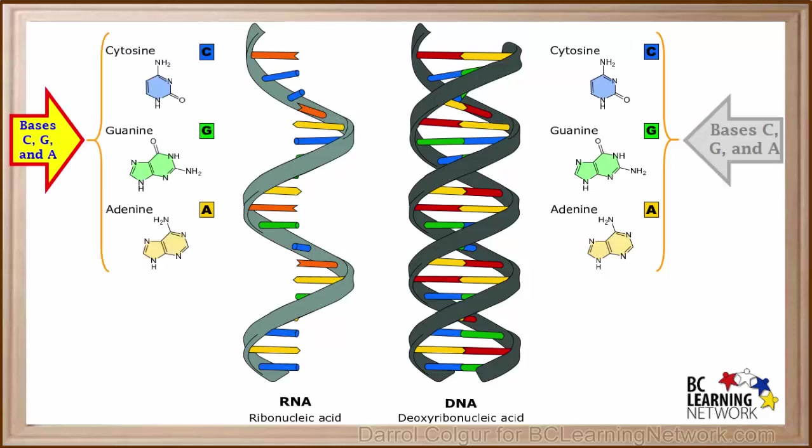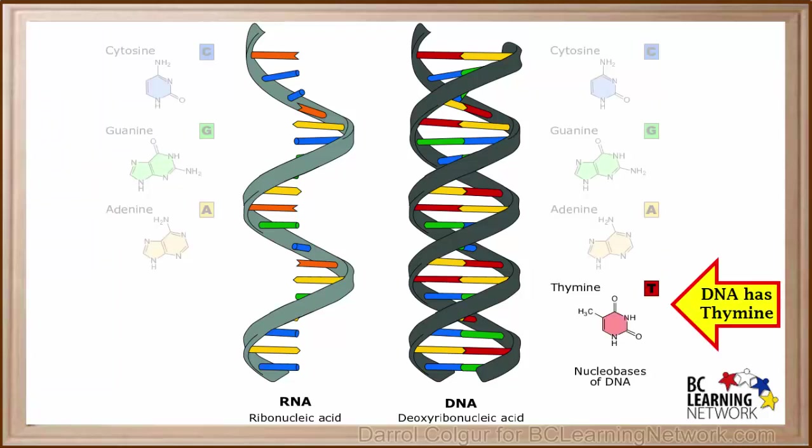And RNA also contains the bases C, G, and A. What makes them different is DNA has the base thymine, while RNA has the base uracil instead of thymine.